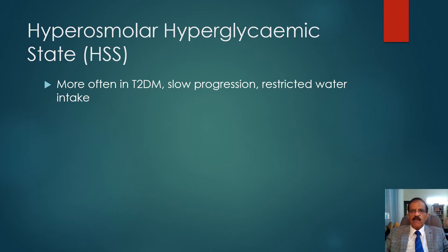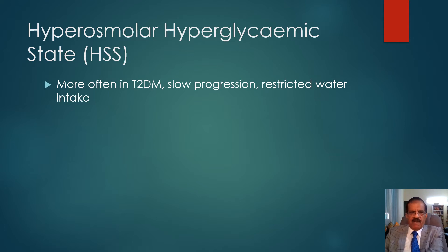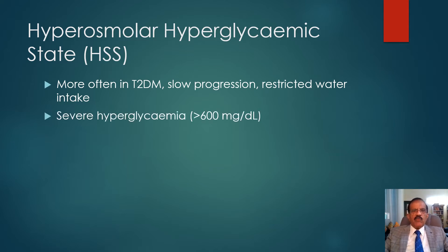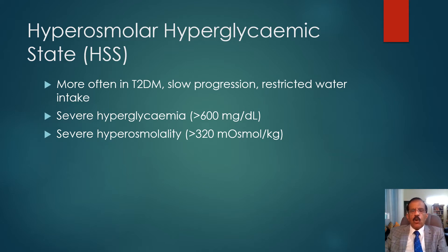HHS progresses very slowly, and it happens when something restricts water intake — the patient has lost the thirst mechanism, was confined somewhere, or water was not available. That is the most common precipitating factor. There is severe hyperglycemia, more severe than in DKA; typically the patient would have 600 mg/dL or more of glucose in their blood.